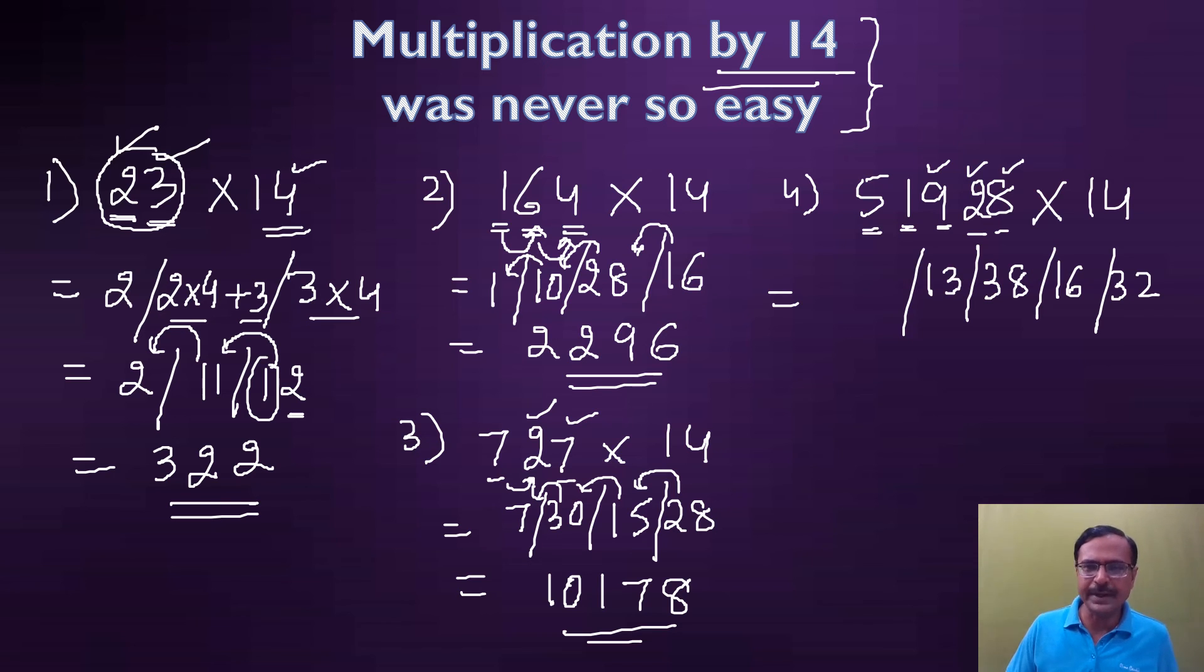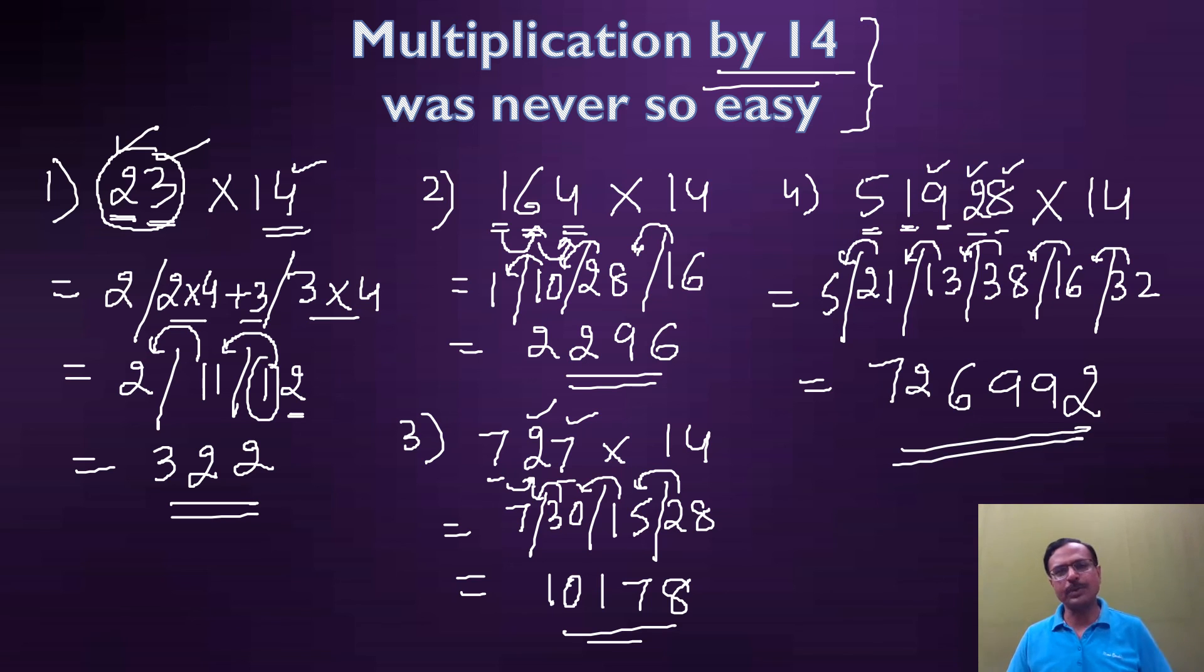5 times 4 is 20 plus 1 gives me 21, and then 5. So let's write the answer now. 2, 3 carried forward 19 means 9, 1 carried forward 39 means 9, 3 carried forward 16 means 6, 1 carried forward 22 means 2, and 2 carried forward 7. So 726992 happens to be the correct answer.